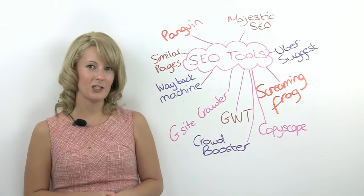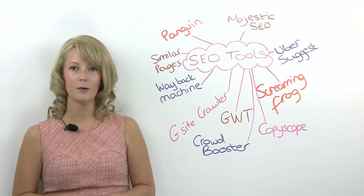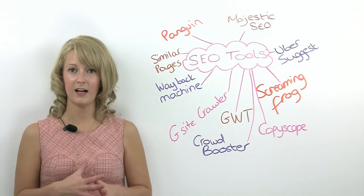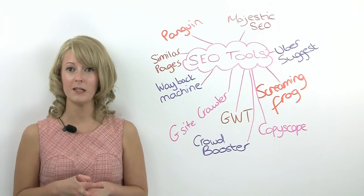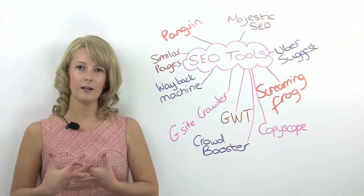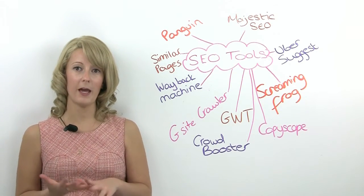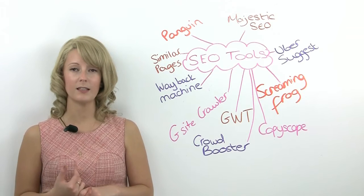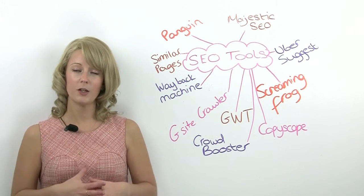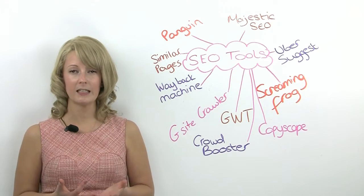We'll start with Similar Pages. This is a Chrome plugin so if you find a page that you're getting particular value out of, maybe it's good as a link building resource, you can use the Similar Pages plugin to see other pages that Google thinks are similar. This can uncover some great new resources to get links from.